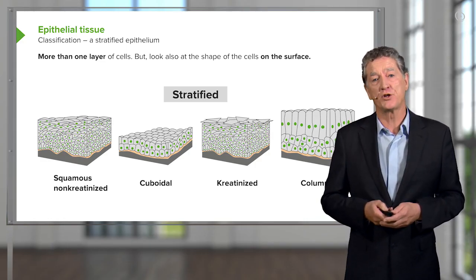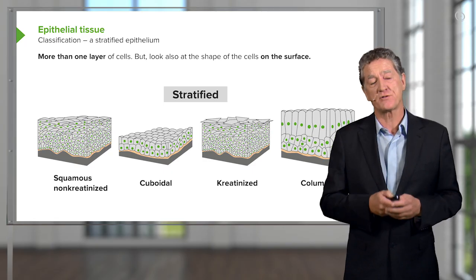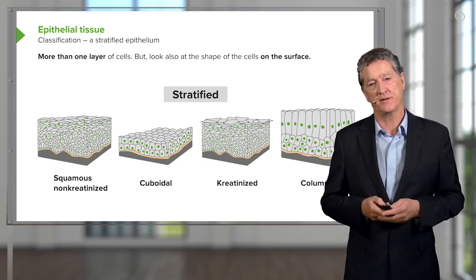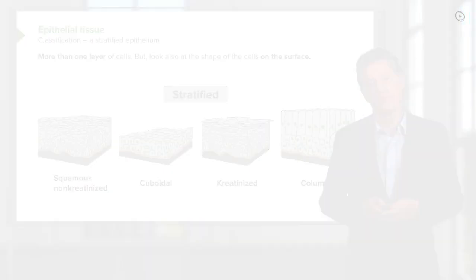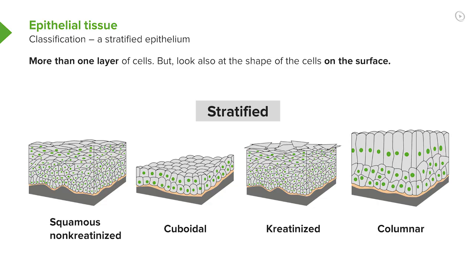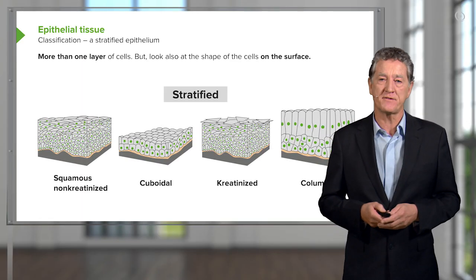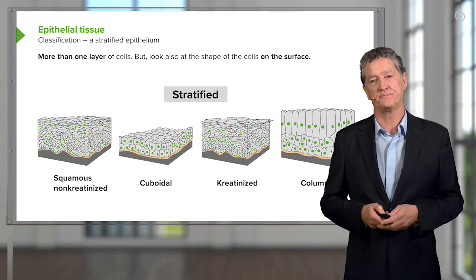The surface cells may be cuboidal, so we call it a stratified cuboidal epithelium. Or, as we see in skin, the surface cells may be keratinized, so we call it a stratified keratinized epithelium. Rarely, we may find an epithelial surface that is stratified and the surface cells are columnar. In that case, it's called a stratified columnar epithelium.